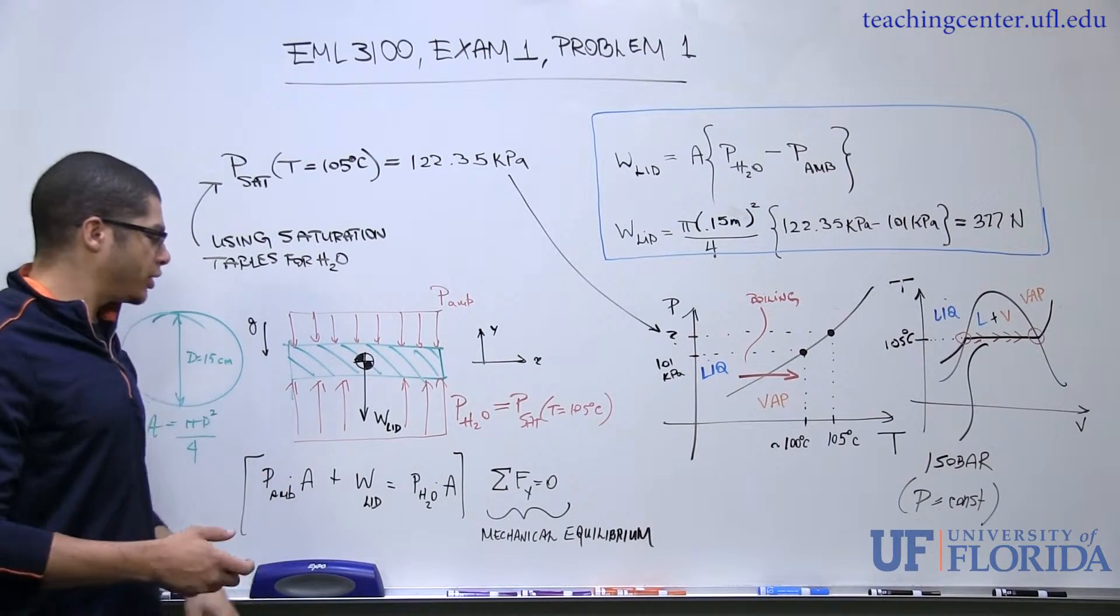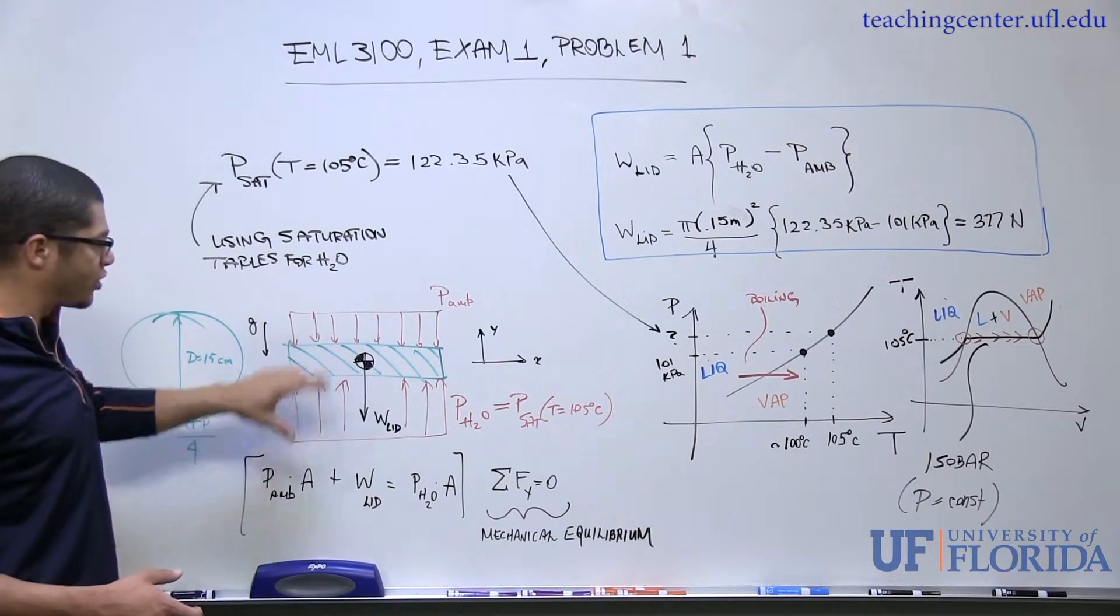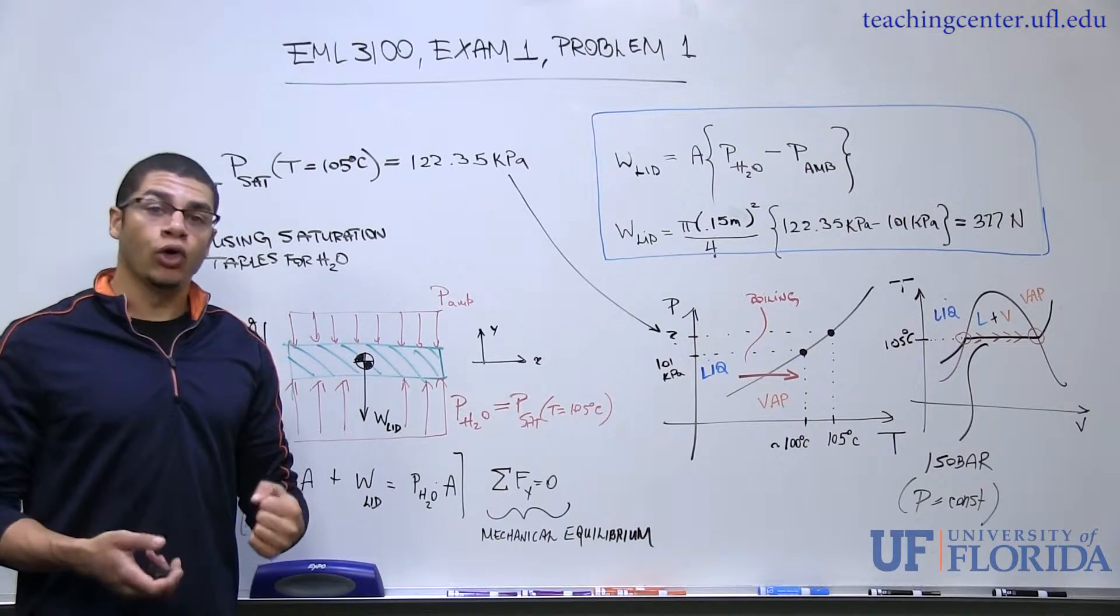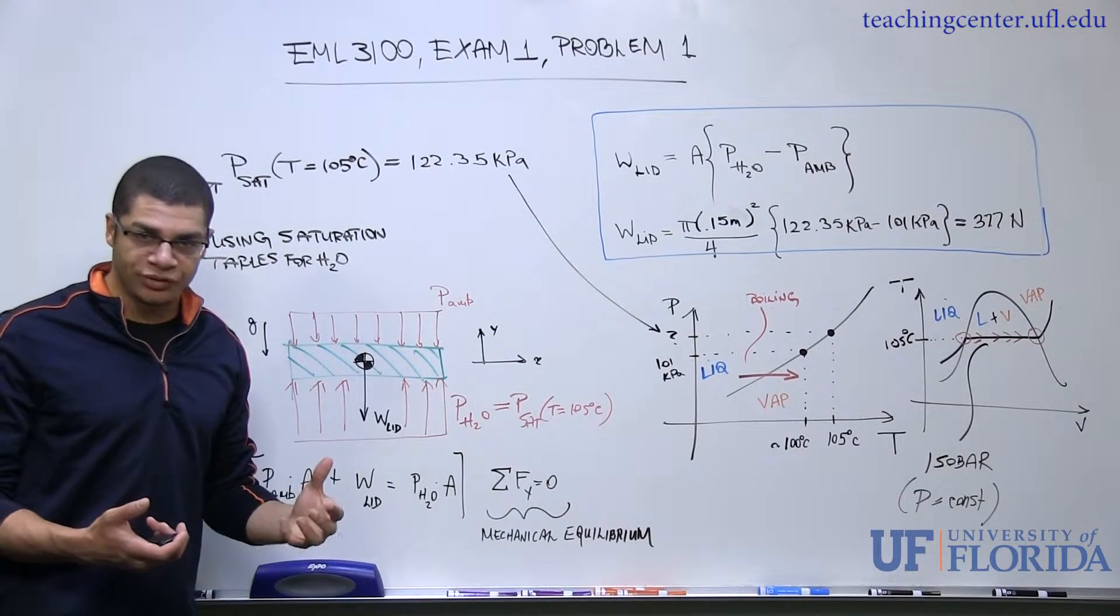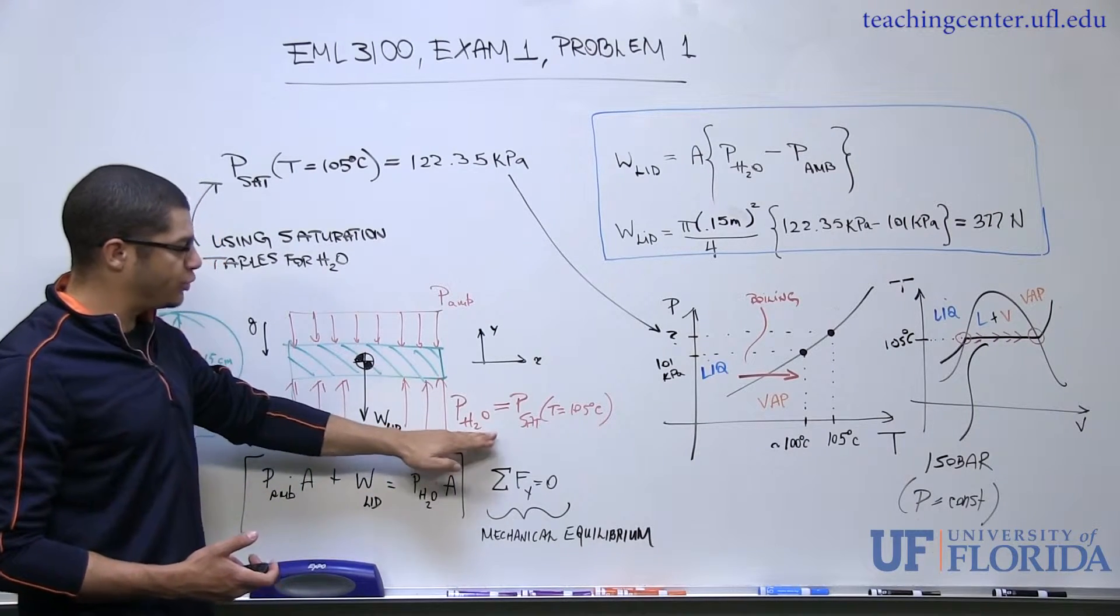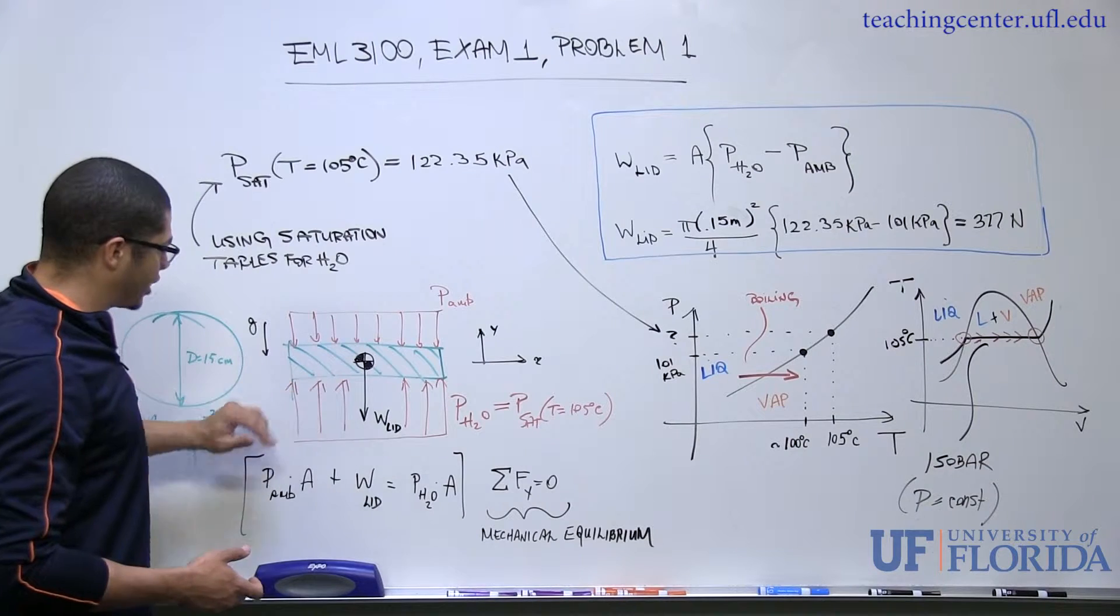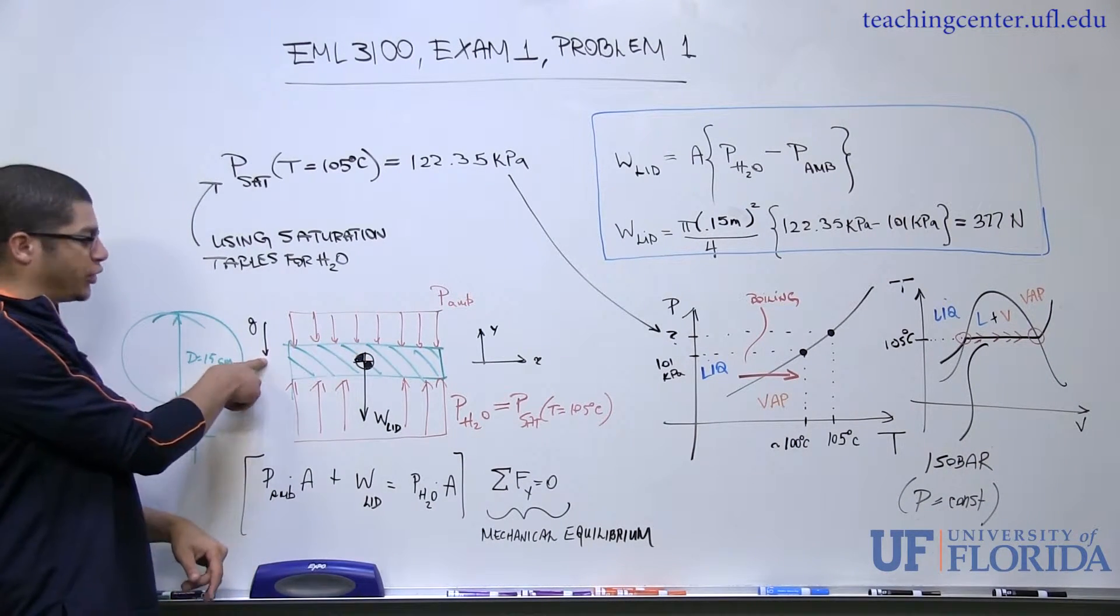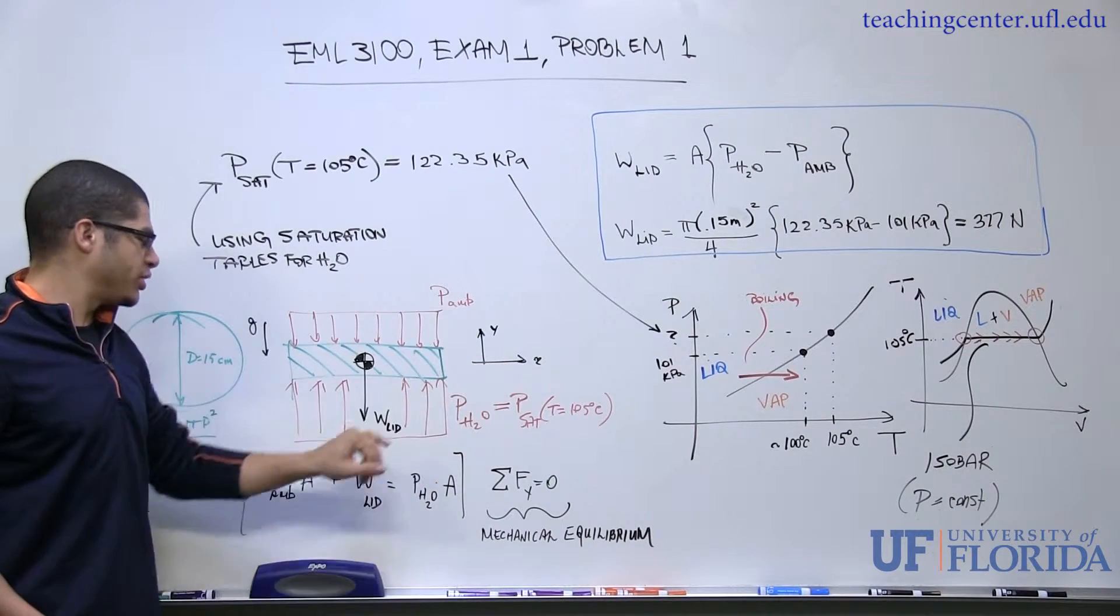Okay, and we're going to assume a mechanical equilibrium for the lid itself. Now this is a small diagram of all of the forces that are acting on the lid. Up top we have a distributed load, which is really just nothing more than ambient pressure. And on the bottom we have another distributed load, which is due to the vapor pressure or the saturation pressure of the water inside. And the remaining force is due to gravity - because we're in a gravitational field we have g acting down. And here's my axes, so Y is up and down.